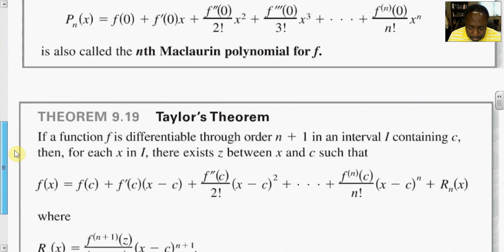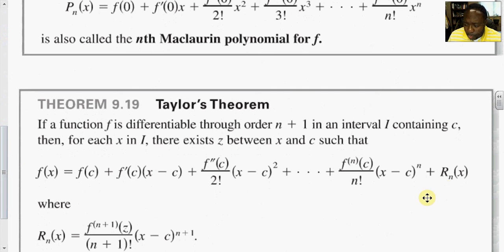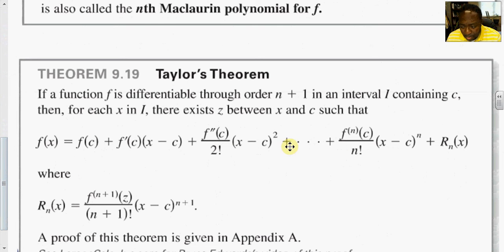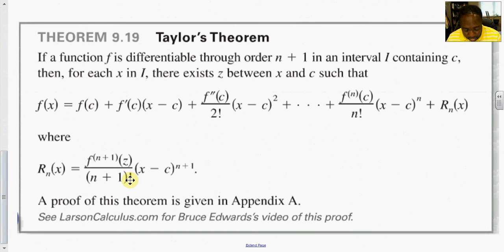Taylor's theorem states that if f is a function differentiable with n plus one derivatives on some open interval I containing c, then for each x in the interval there exists a value z between x and c such that f(x) can be written as the Taylor polynomial plus a remainder term r sub n of x, which can be proven to be a fixed quantity.